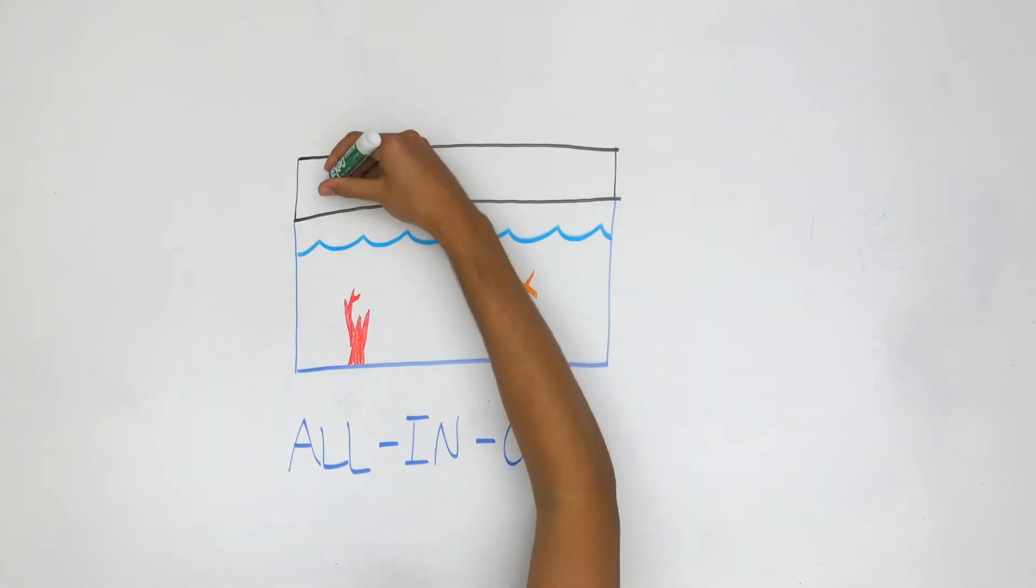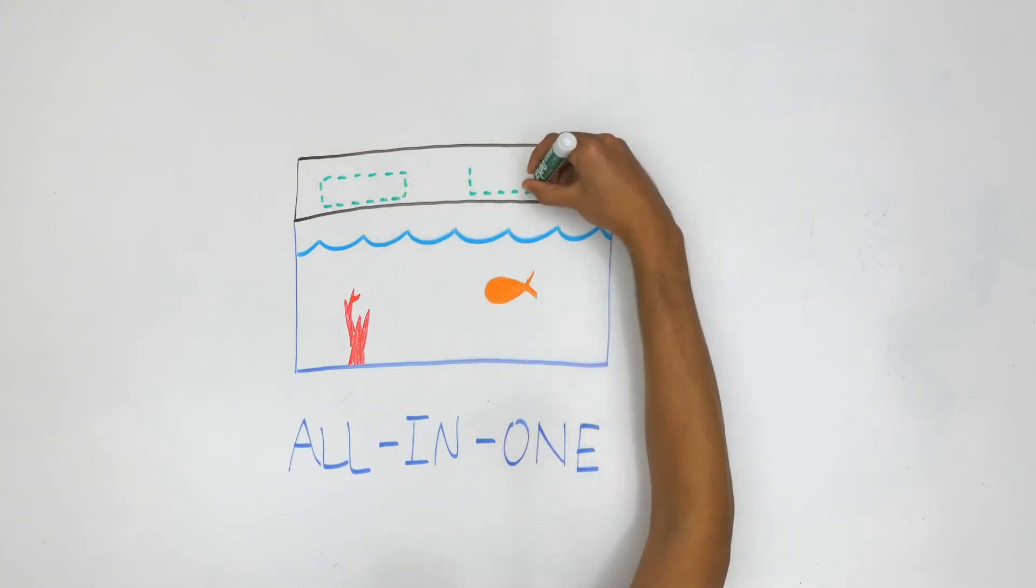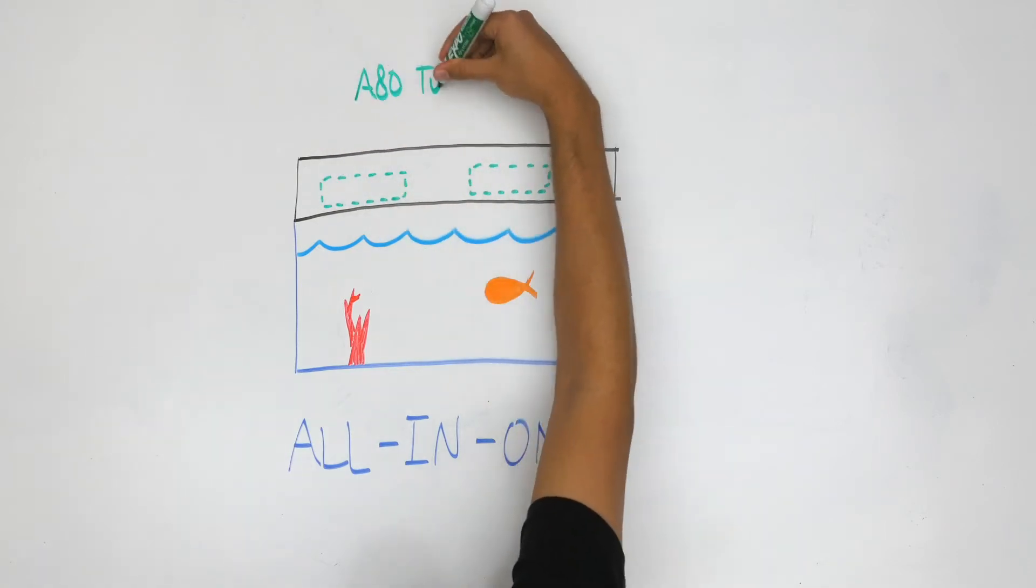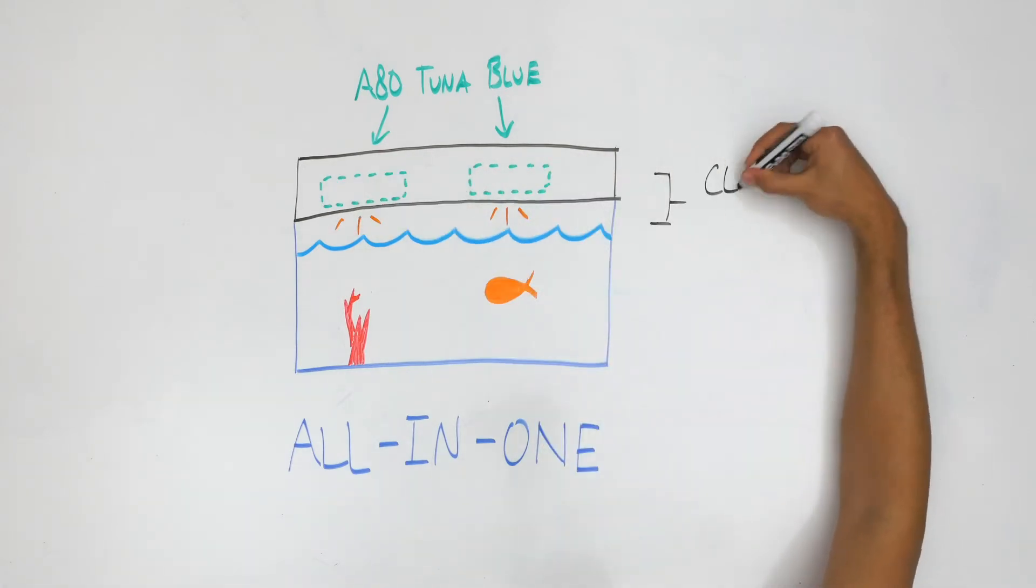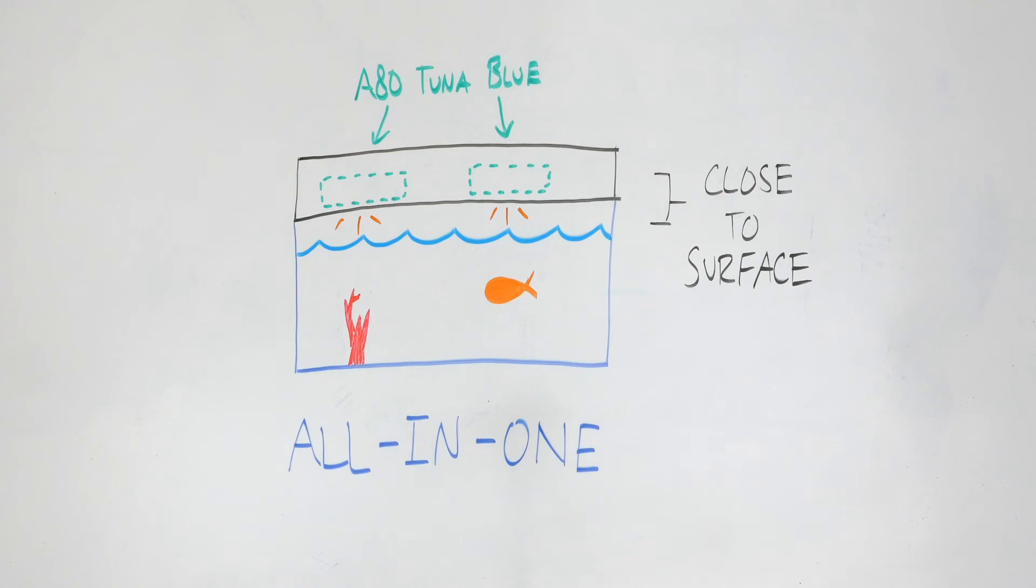In this case, because the light will be very close to the water surface, you may need additional fixtures for ideal coverage. In a setup like this, the multiple A80 Tuna Blue units in close proximity to the surface will result in far better performance than you'd get with the stock LEDs that come with these tanks.